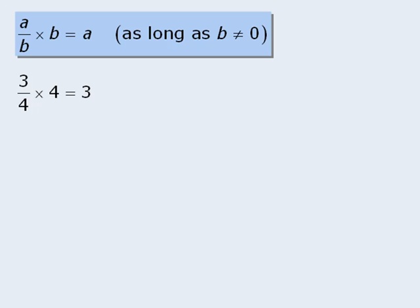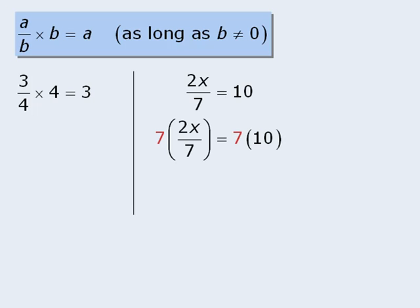We can also apply this rule to help us solve equations. Here, if we multiply both sides by 7, we get 2x on the left-hand side, and we get 70 on the right-hand side. From here, we can divide both sides by 2 to see that x is equal to 35.